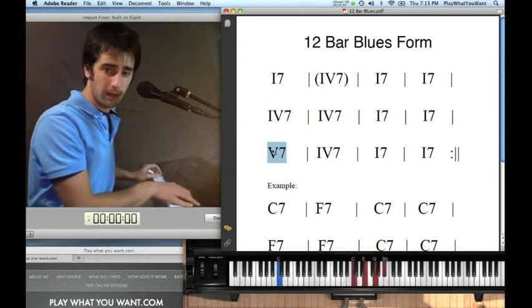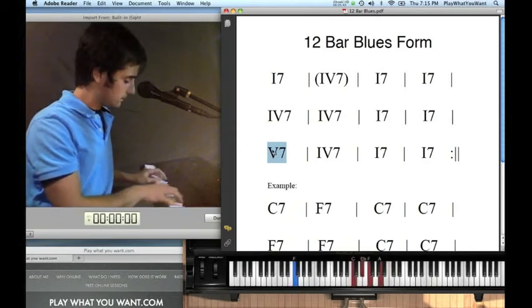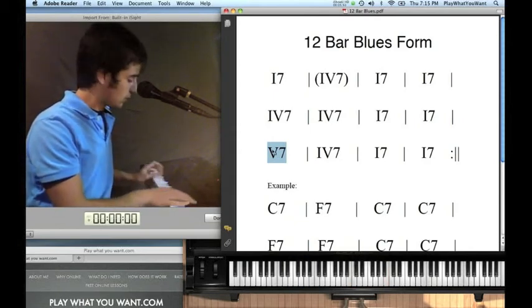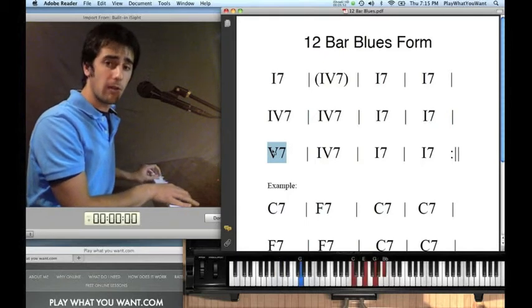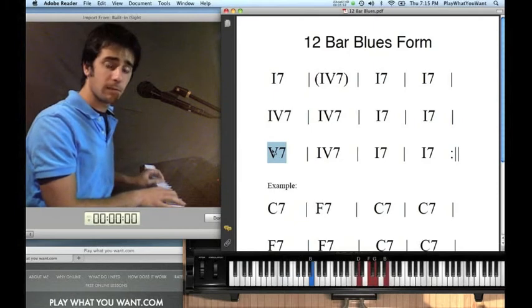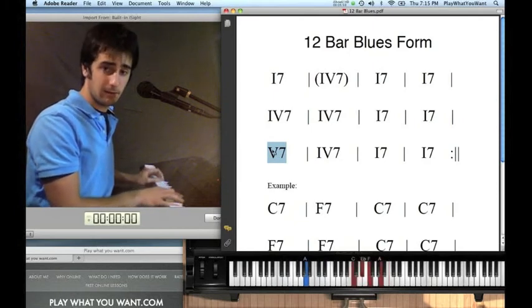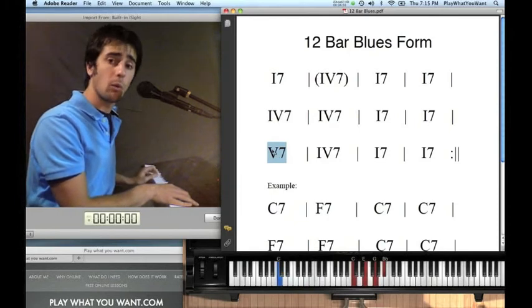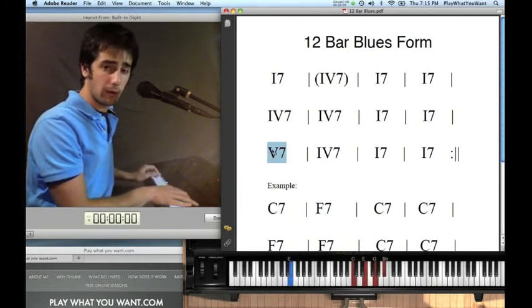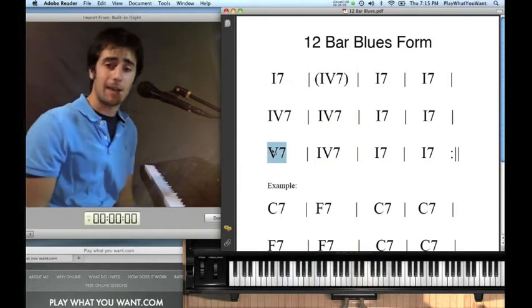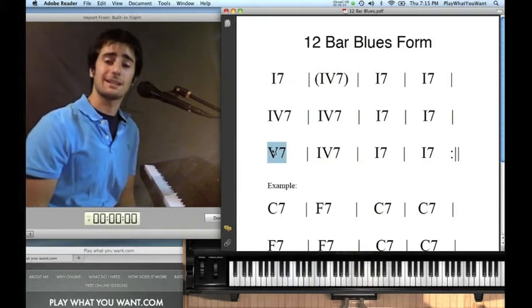Next one. Four chord. Four seven. Back to the one: one, two, three, four. Everything is four beats. Here's the V7. The V7. Back to one: two, three, four. One, two, three, four. At that point, we're at the end of the form, and we can repeat back to the top and play it all over again until the end of the song.